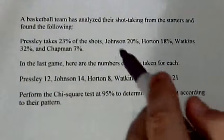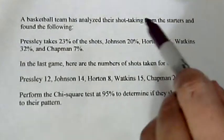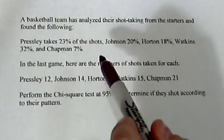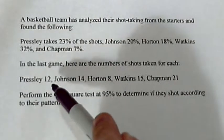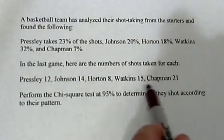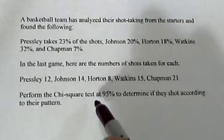Here's a chi-square problem involving a basketball team. They've analyzed their shot-taking from the starters, and here we have the percents that each of the starters shoots. And then in a recent game, here's how many shots they actually took. So we want to see, were they consistent with what they usually do? We're going to use the chi-square test for that.